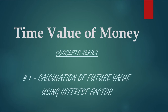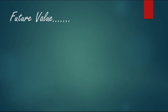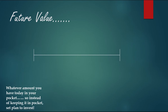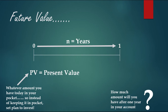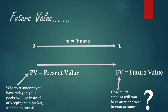In this video we will be discussing how to calculate the future value using the interest factor. Whatever amount you have today in your pocket is the present value (PV). If you plan to deposit it for one year and want to calculate the amount in your account after one year — that period is represented as n — then the amount after one year is the future value (FV), which will be more than the present value.